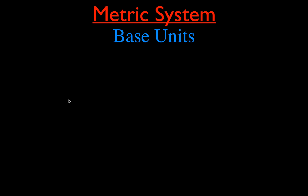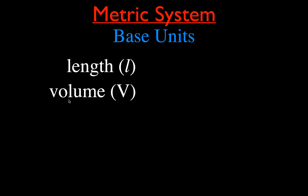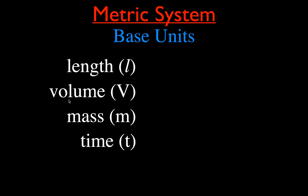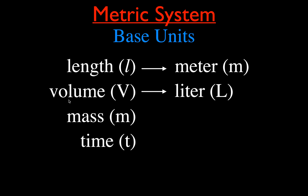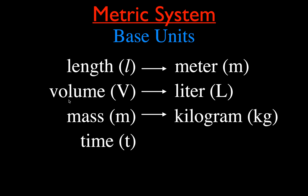Before we get started with the conversion, let's quickly go over some of the basic units — the base units of the metric system that you should know. The most common ones are length, volume, mass, and time. Length has abbreviation L and its base unit is the meter (m). Volume is capital V, its base unit is the liter (L). Mass is m and its base unit is the kilogram. Time is T and its base unit is seconds (s).